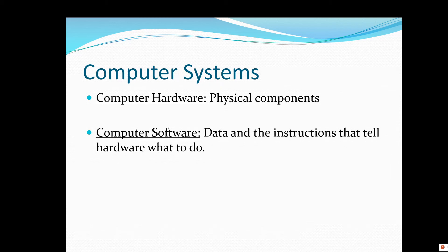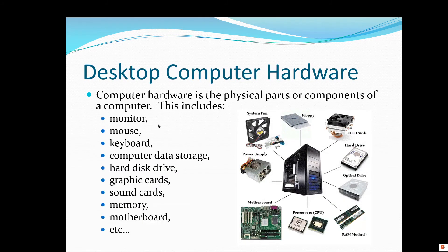That's where computer software comes into play — and also the data, the actual information. So if you're creating a word processor document, the data itself would be the document you created, and the software or hardware instructions would be the actual program you use, like Microsoft Word. Here are some examples — these are all the physical components that make up computer hardware.